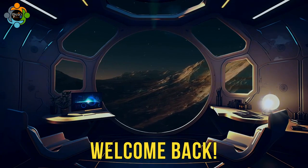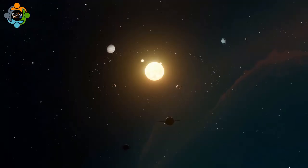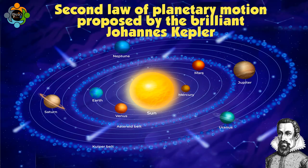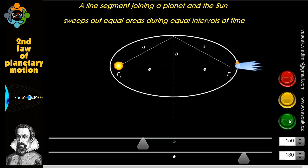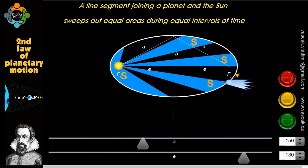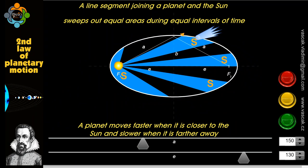Hello and welcome back to another episode of Physics Partner. Today we are going to explore the second law of planetary motion proposed by the brilliant Johannes Kepler. Kepler's second law states that a line segment joining a planet and the Sun sweeps out equal areas during equal intervals of time.